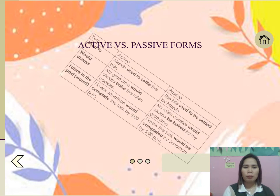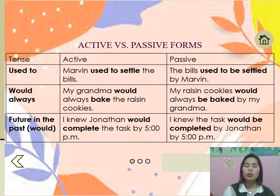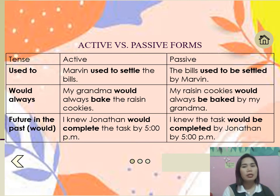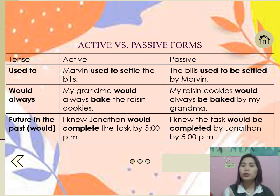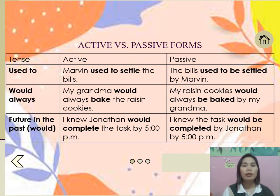For modal verbs: 'used to settle' becomes 'used to be settled'; 'would always bake' becomes 'would always be baked'; 'would complete' becomes 'would be completed.' Grade 9, those are some very important things to remember in changing active to passive form.